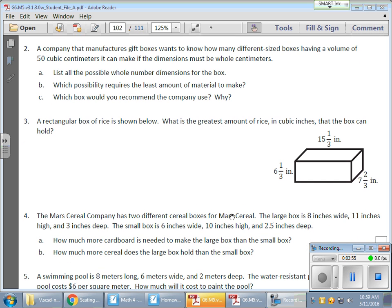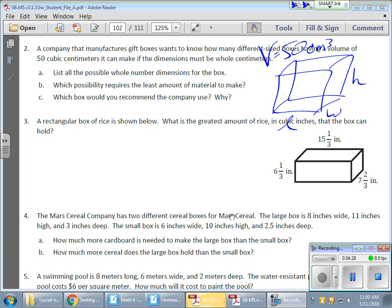In this one here, number two, we have a company that manufactures gift boxes. They want to know how many different sized boxes that have a volume of 50 cubic centimeters it can make. Now, once again, understanding that this is going to be some variety of rectangular prism, because it is a box, and we need 50 cubic centimeters to be its volume. So, the volume needs to be 50 cubic centimeters, which means if I have a length, a width, and a height, and my formula is length times width times height, I need three values that will multiply to get me 50. So, 50 is the volume. I need to know what are the possibilities.